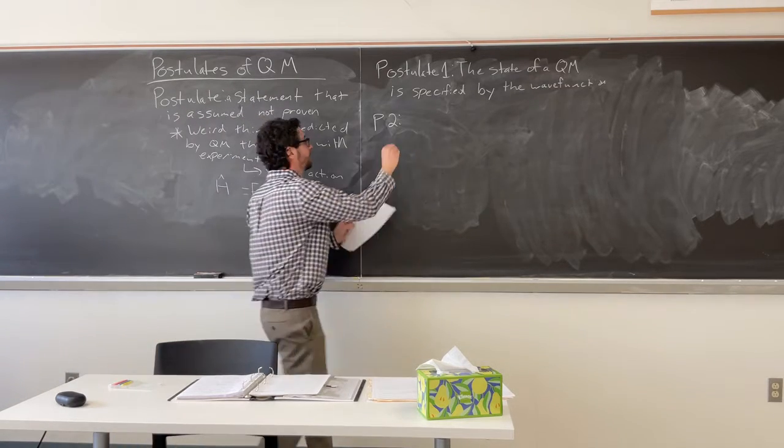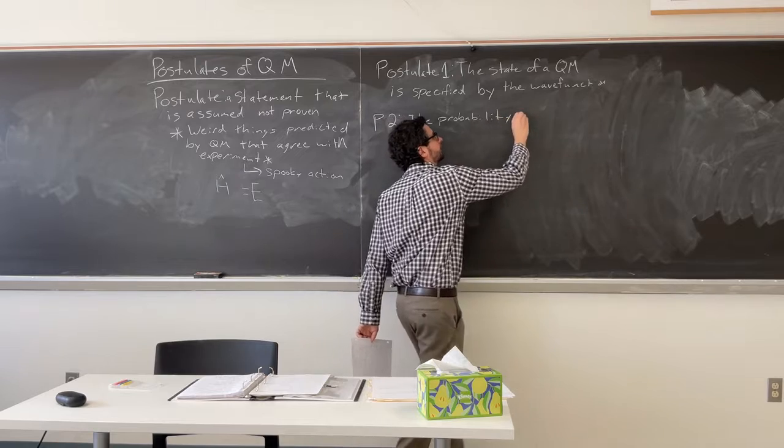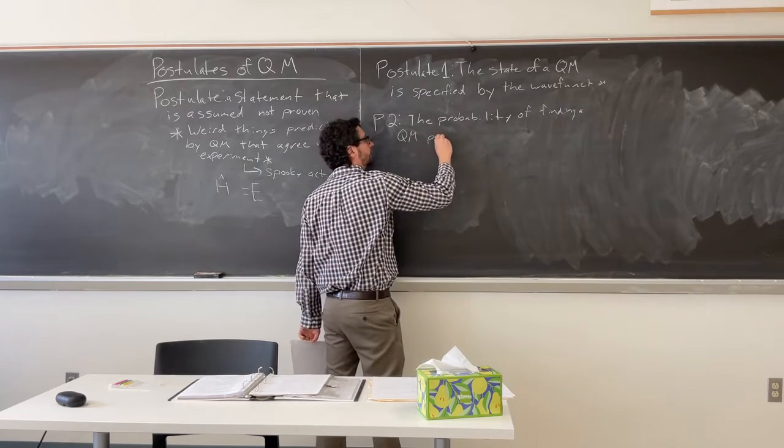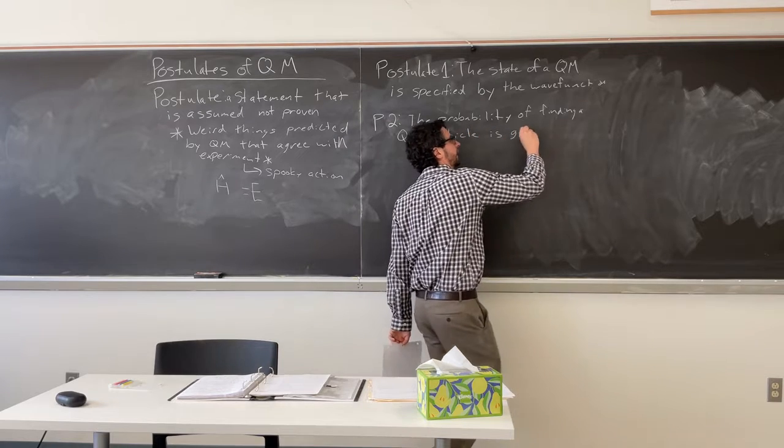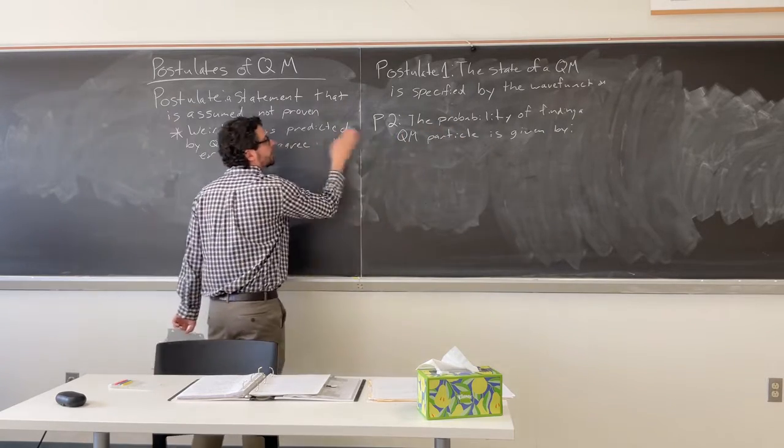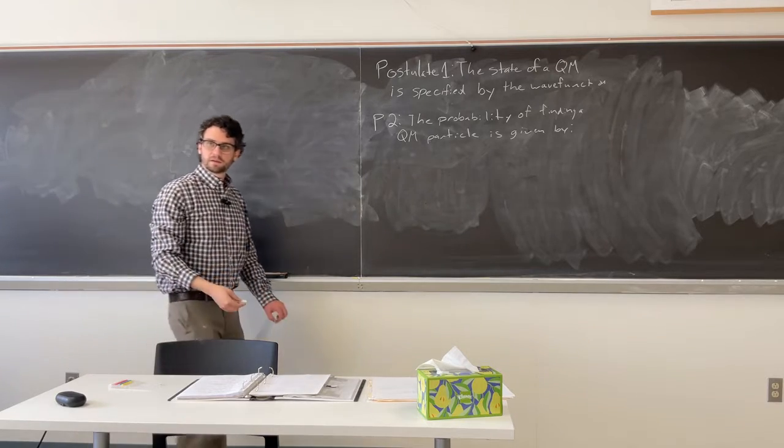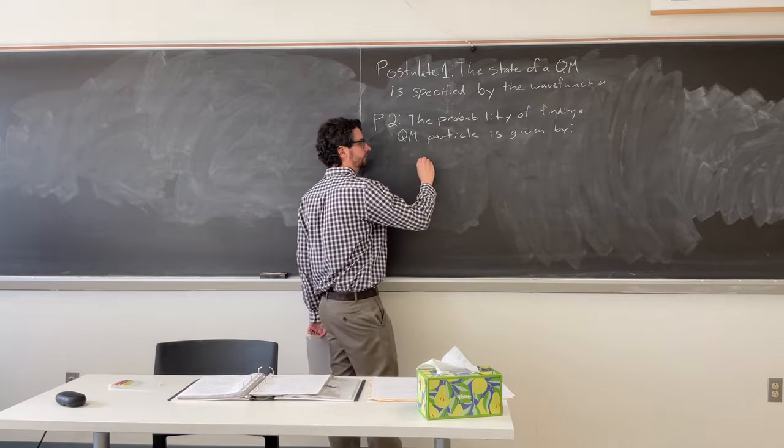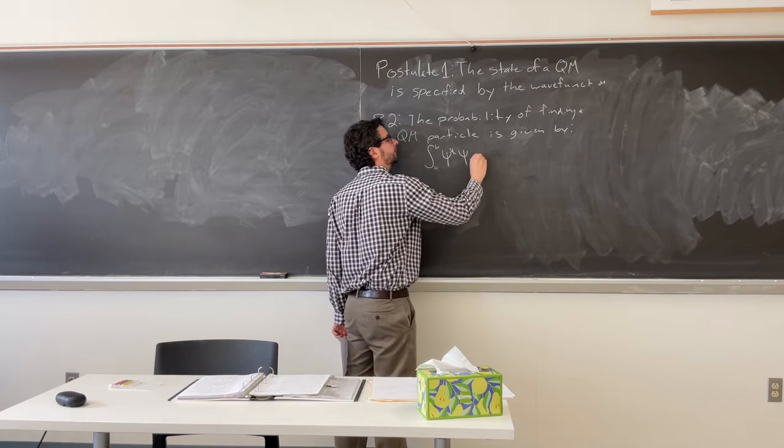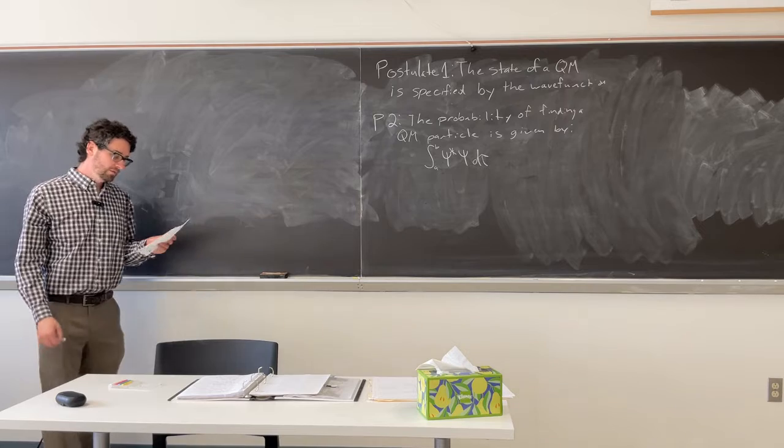P2. Probability. Finding a quantum chemical particle is given by. What would you do or what mathematics do you have to do to figure out the probability of a quantum particle? Yeah. We've done that a handful of times already.